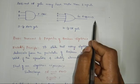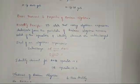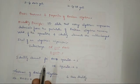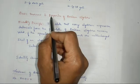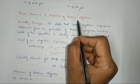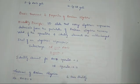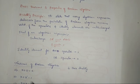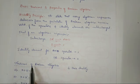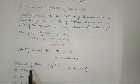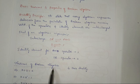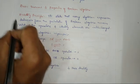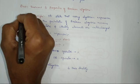The next concept is basic theorems and properties of Boolean algebra. Under this, there are 10 basic theorems and properties we will look into. Before going to the properties and theorems of Boolean algebra, first let us know the duality principle.